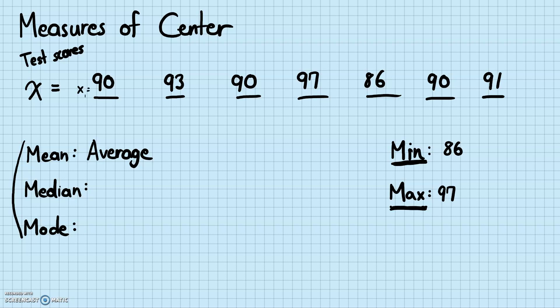So: x₁ equals 90, x₂ equals 93, x₃ equals 90, x₄ equals 97, x₅ equals 86, x₆ equals 90, and x₇ equals 91. I'm assigning different names for each piece of data. The mean is usually notated as x̄ — the variable with a little bar on top. When you see a variable with a bar on top, it means the mean of that variable. That equals the summation of all the x's from 1 to n, divided by n, where n is the number of data we have — in this case, 7.